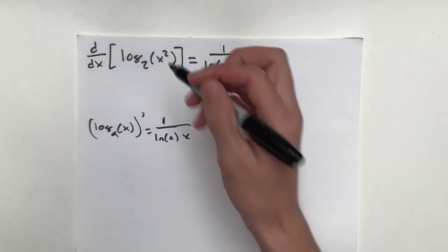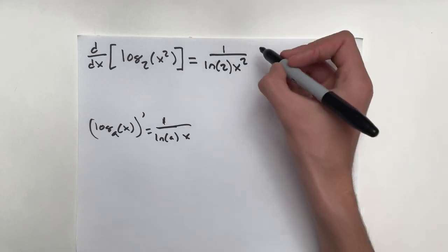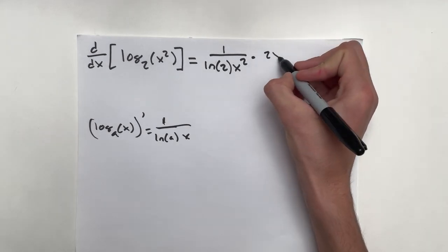And now don't forget, x squared, we have to multiply by the chain rule. Let's apply it by 2x.